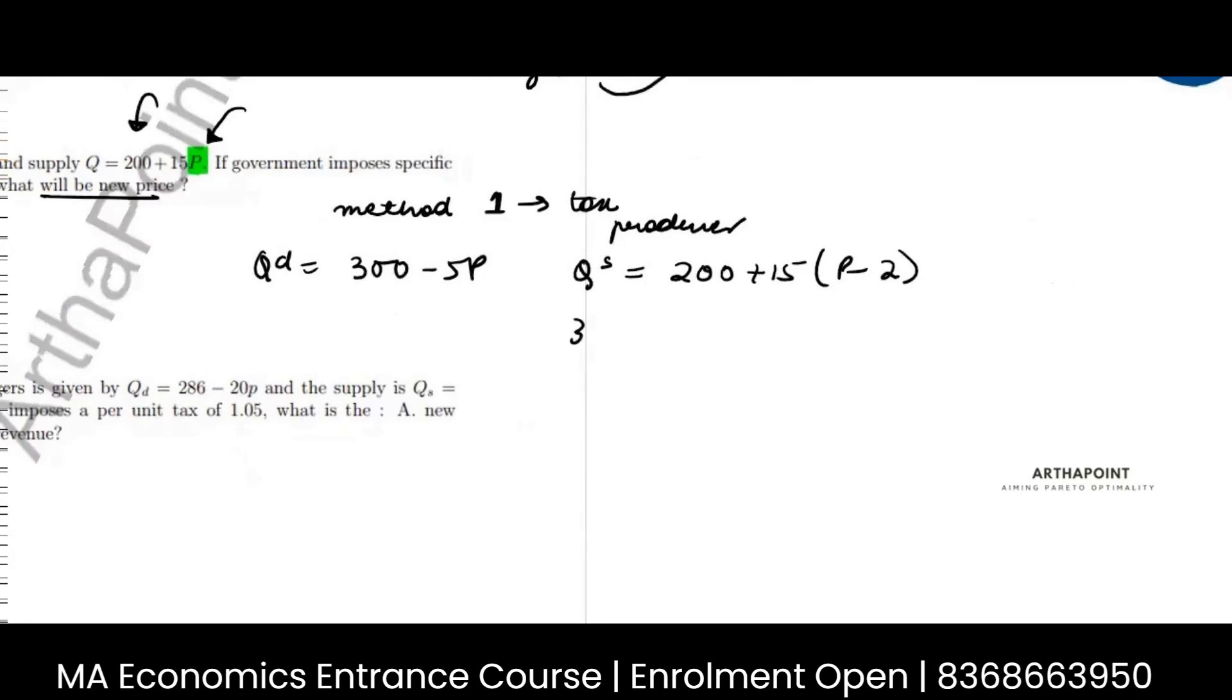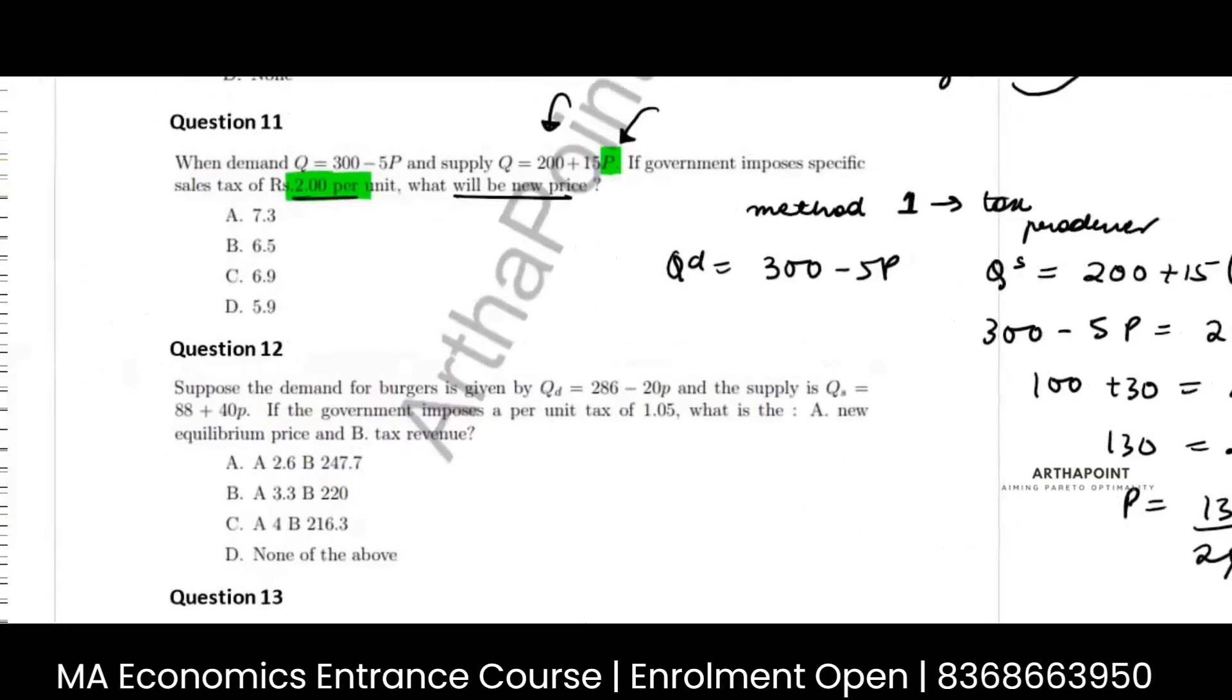So we will get 300 minus 5P equals 200 plus 15P minus 30. So I will get 100 plus 30 equals 20P. 130 equals 20P. P equals 130 divided by 20. So this would be 6.5. This will be your answer.